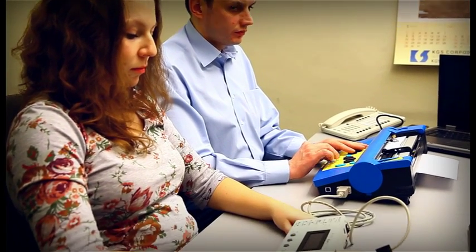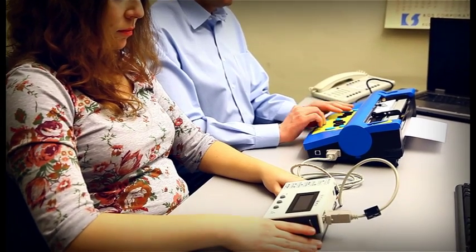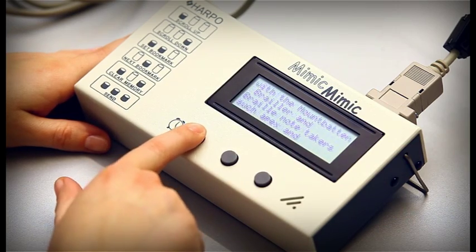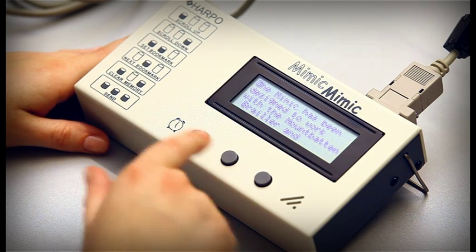When you want to read again what has been typed, you can scroll the text up or down by pressing the buttons one or three respectively on the Mimic.